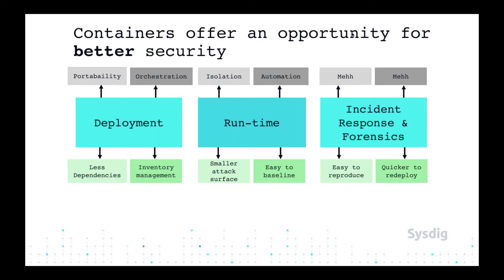On the incident response and forensics side, there are some challenges the ecosystem needs to figure out, but if you do have an incident it's quicker to roll back a deployment and push out a new image rather than having a two-week patch schedule for a critical vulnerability on a host. You can easily update that package in a container, deploy the new version, and you're good to go. With containers, it's also easier to reproduce events — you can commit a container to a safe state, pause it, quarantine it, and get more visibility into the state of the container when any event has occurred.